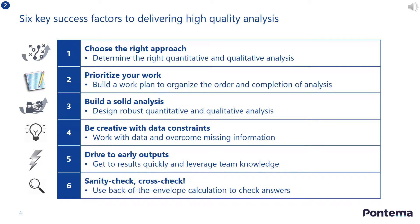When executing high-quality analysis, there are six key success factors you need to consider. Firstly, choosing the right approach, which will determine the right quantitative and qualitative analysis. Secondly, prioritizing your work, which is about building a work plan to organize the order and completion of analysis. Thirdly, building a solid analysis, which is about designing robust quantitative and qualitative analysis. Fourthly, being creative with data constraints, which is about working with incomplete data. Fifthly, driving to early outputs, which is about getting to results quickly and leveraging other knowledge in the organization. And lastly, sanity checking your analysis, which ensures the numbers in the analysis make sense and that the issues you raise are both reasonable and relevant.